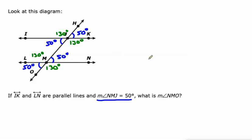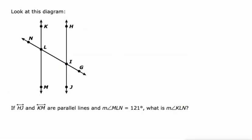They form a straight line with those blue angles, so they add up to 180 degrees. What's being asked of us? NMO — and that is a 130 degree angle. It is supplementary to angle NMJ. 130 degrees.